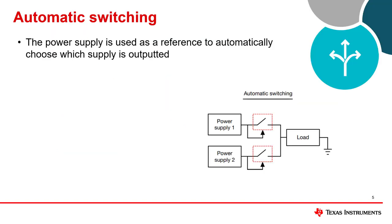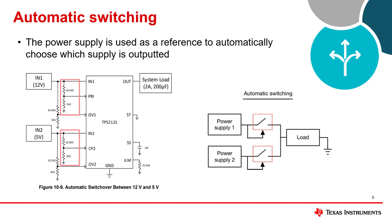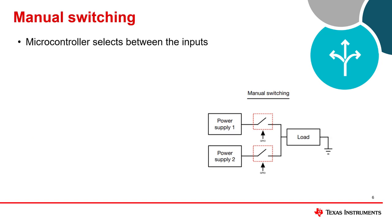Automatic switching uses the power supply itself as a reference to choose which supply is outputted. Here is an example of how this is applied in one of our power muxes, the TPS2121. The switch is controlled by a voltage division from the input supplies. This configuration can be preferable as it does not require an external signal to switch between loads, which is great when no microcontroller is available. This simplifies the design architecture and allows the device to remain autonomous in a system.